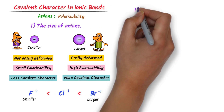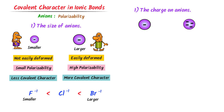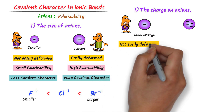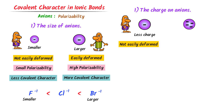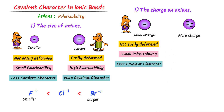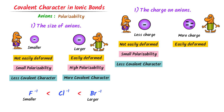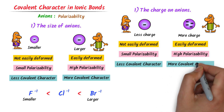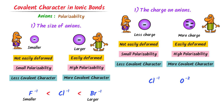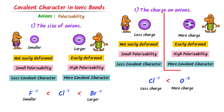The second factor affecting covalent character is charge on the anion. An anion with less negative charge will not easily be deformed, so its polarizability is low and it has less covalent character. For example, the charge on oxygen is 2− and the charge on chlorine is 1−. Hence, oxygen has more covalent character than chlorine. Therefore, if the charge on an anion is high, it has more polarizability and more covalent character.